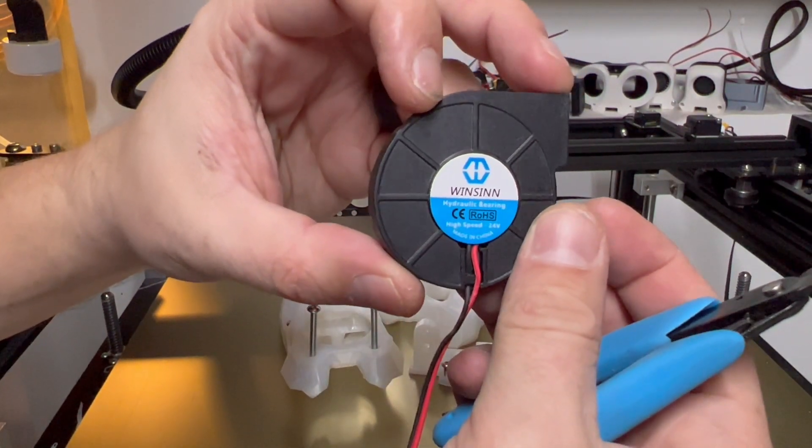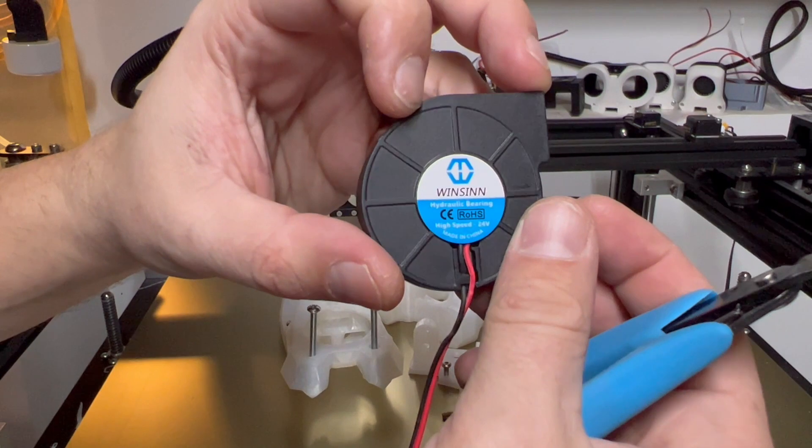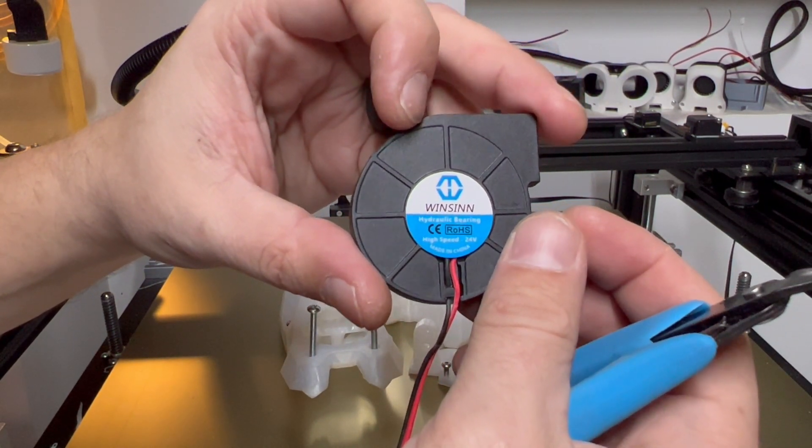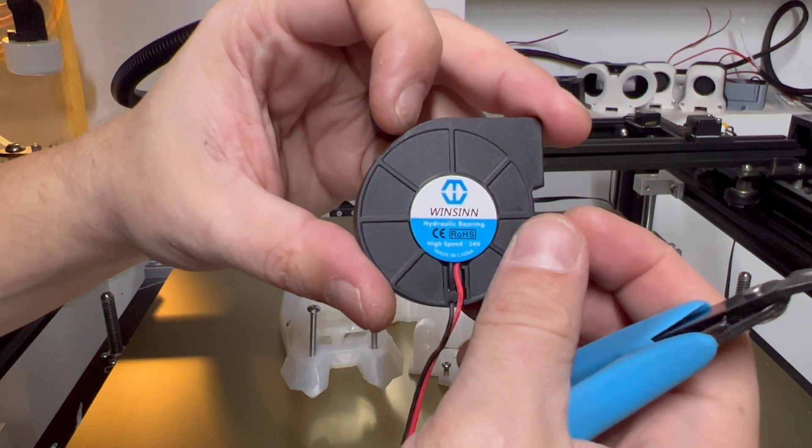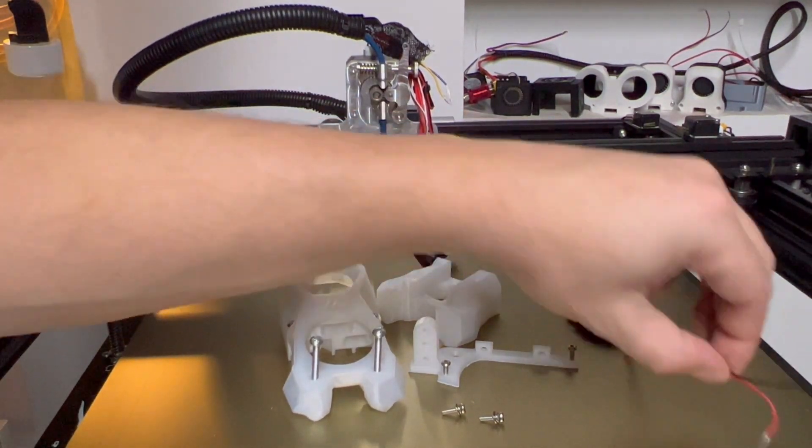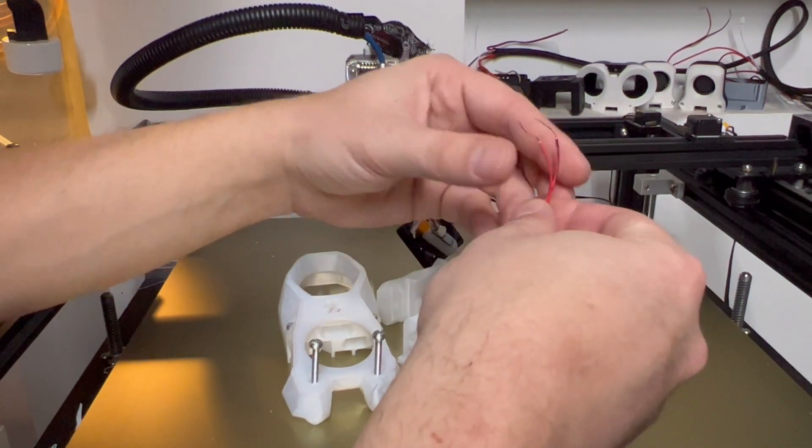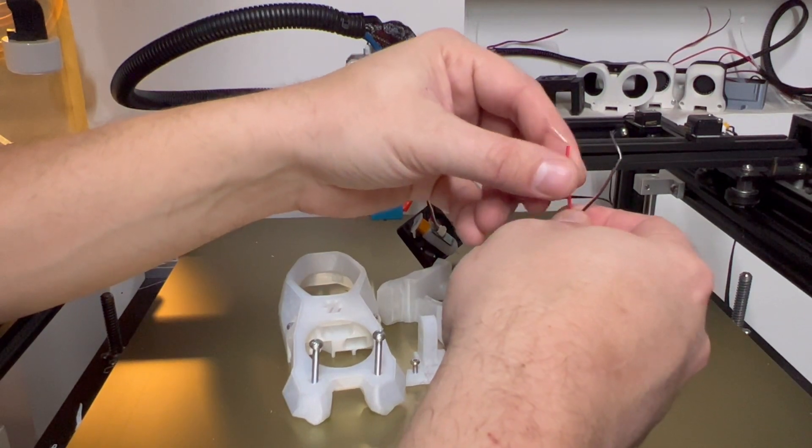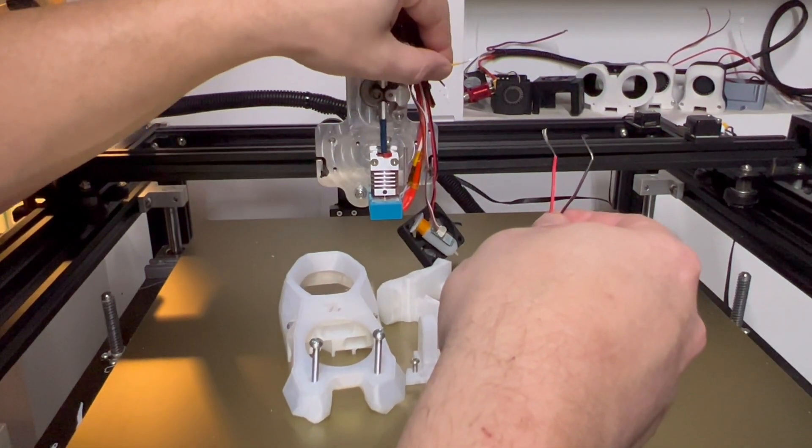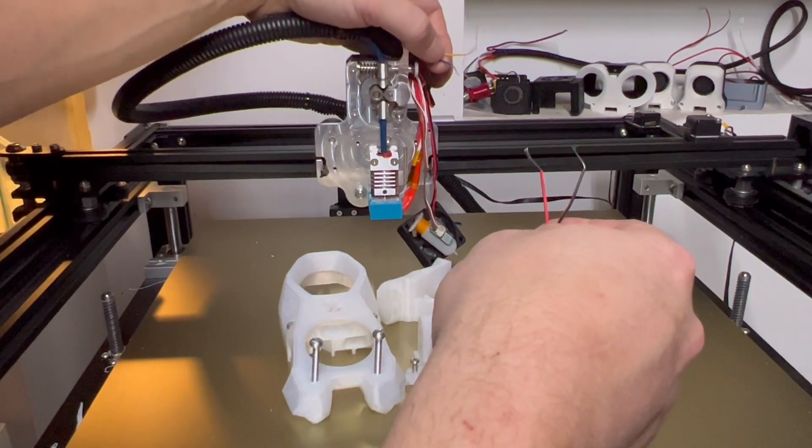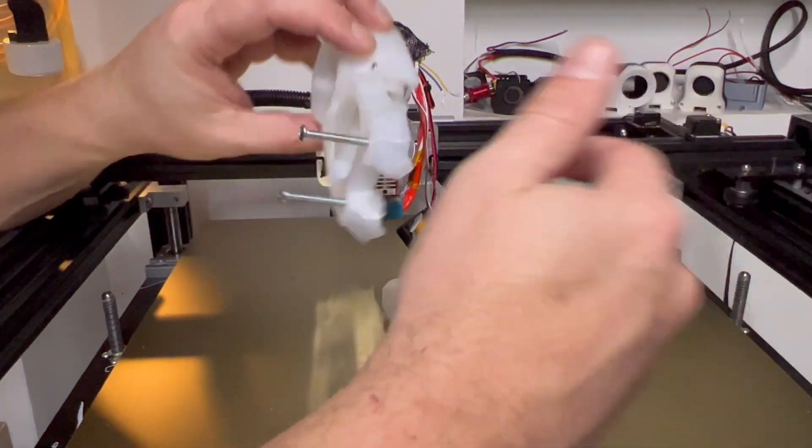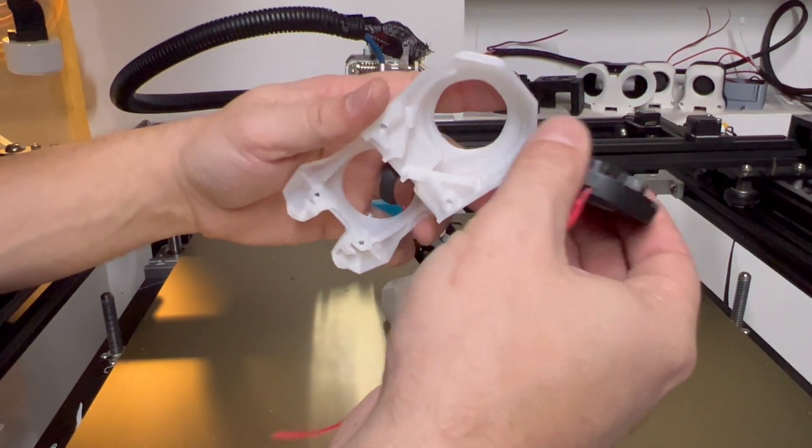This is a 5015 fan, hydraulic bearing. I got it on Amazon, a four pack for around ten bucks, I think. It's 24 volts. That's about it for the fan. I pre-cut the adapter piece off and I pre-stripped them. That's where we're going to attach the red wire to the yellow wire up here and the black wire to the blue wire over here. More about that later.